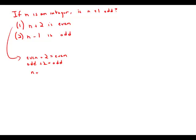The fact that n+2 is even tells us that n is even. Well, if n is even, then n+1 is odd. So that conclusively allows us to answer the question. Statement 1 by itself is sufficient.